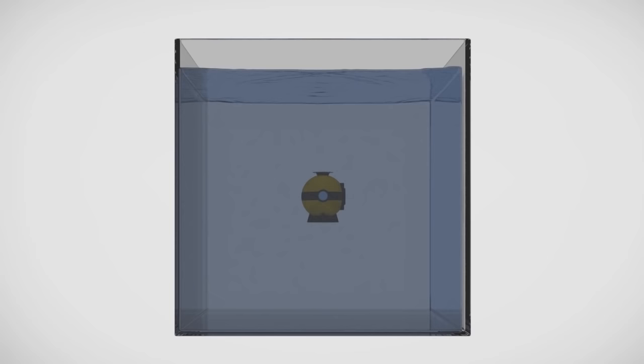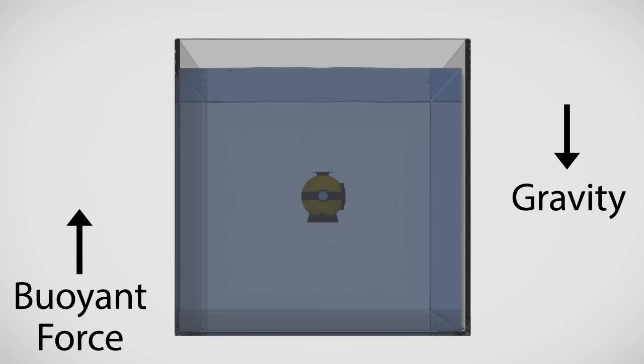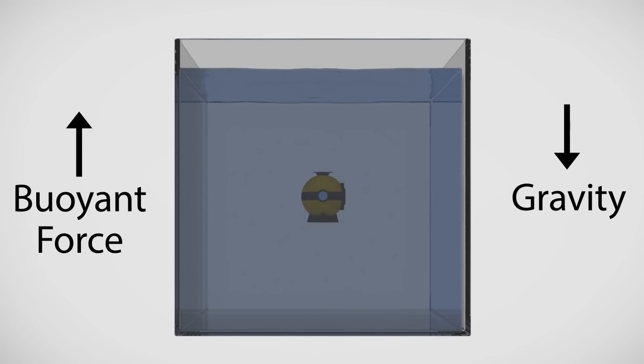To understand the Cartesian diver we first need to recognize something about fluids which are liquids or gases in gravity. A body experiences not only a downward gravitational force but an upward force in addition. This force is called the buoyant force.